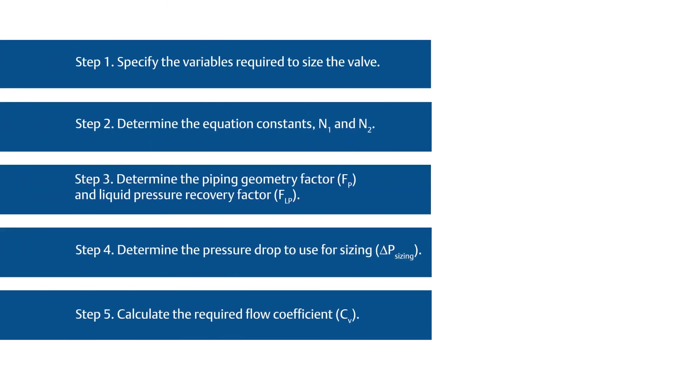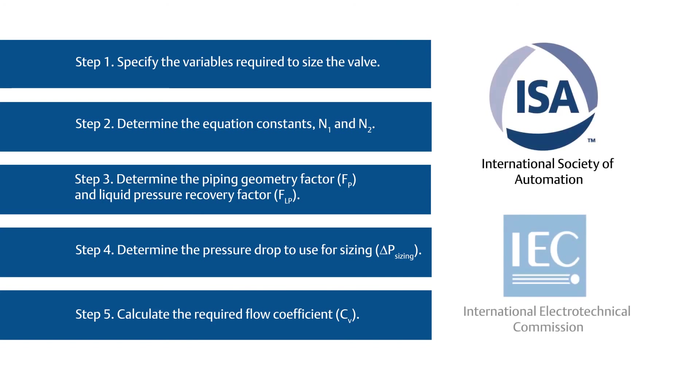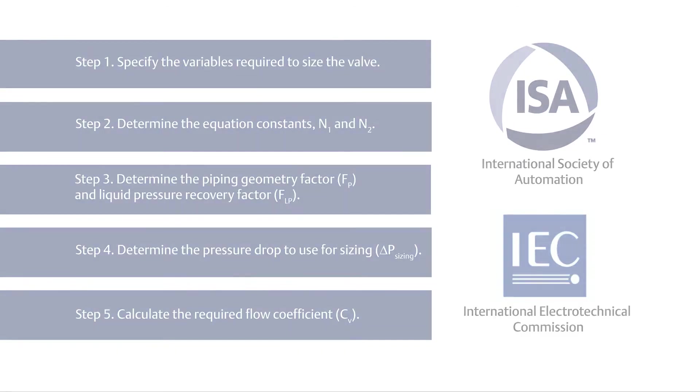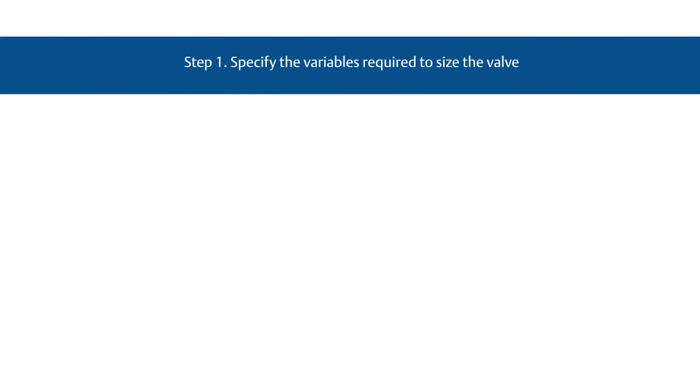In this video, we'll go through a step-by-step process for sizing control valves for liquid flow using the ISA and IEC procedure and apply each step to an example valve. Let's go through how to verify the appropriate valve size. Step 1, specify the variables required to size the valve. The desired valve design is a Class 300 globe valve with an assumed size of 3 inches and an equal percentage cage.